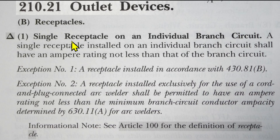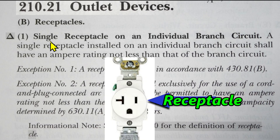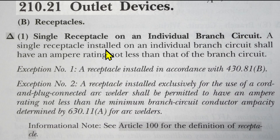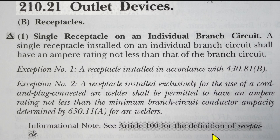Notice it says 'receptacle,' not 'receptacles.' This means that if you had a 20 amp circuit, you would have to put a 20 amp single receptacle on it. But down here it says informational note — and this is the change for 2023 — see Article 100 for the definition of receptacle. So that's what we're going to do now.